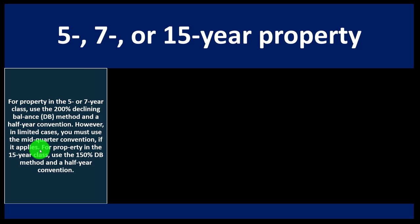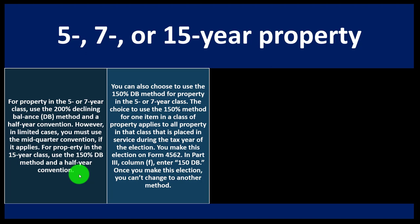For 15-year class property, you use the 150% declining balance method with the half-year convention — similar to double declining balance, but 150% instead of 200%. You can also choose to use the 150% declining balance method for five- or seven-year class property, though you typically wouldn't since the 200% method gives you more depreciation up front. However, there are situations — such as having a loss past the threshold — where you might want to taper it back.